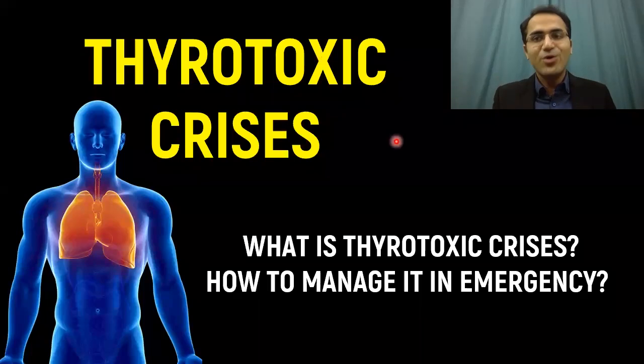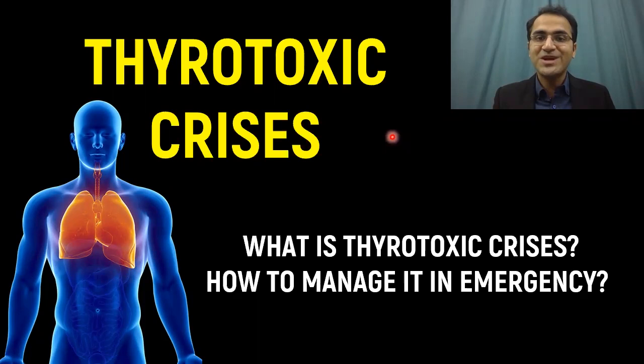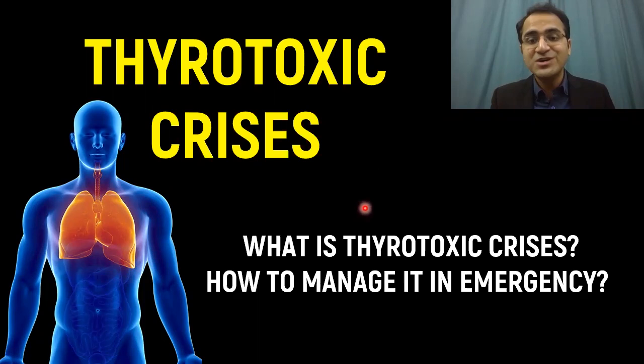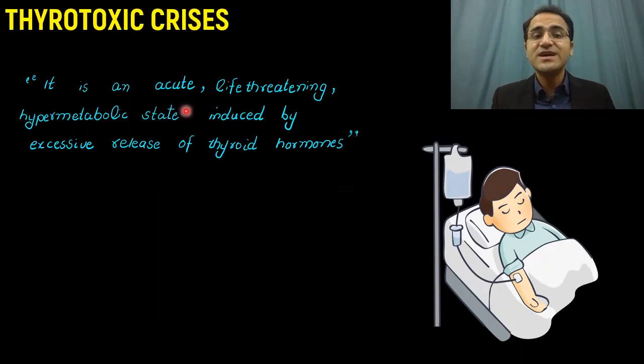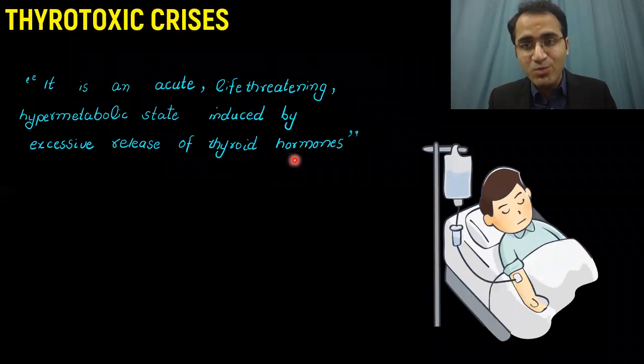In our video series on emergency medicine, in this video we'll be talking about thyrotoxic crisis or thyroid storm. We'll discuss what is thyrotoxic crisis and how do you manage thyroid storm in the emergency department. First of all, what is thyrotoxic crisis? Thyrotoxic crisis or thyroid storm is an acute life-threatening hypermetabolic state induced by excessive release of thyroid hormones.